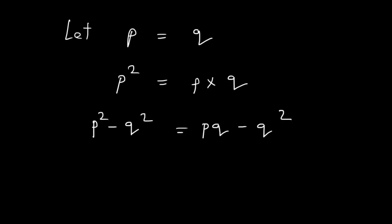Now, Anna, let's factorize the left hand side. Over here, we have P square minus Q square. I can factorize this as P minus Q into P plus Q. Alright, and on the right hand side, I can take out Q and the expression becomes Q into P minus Q.